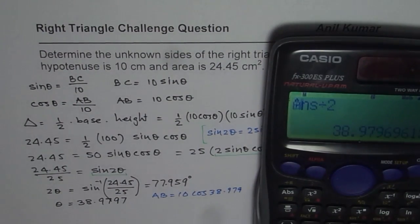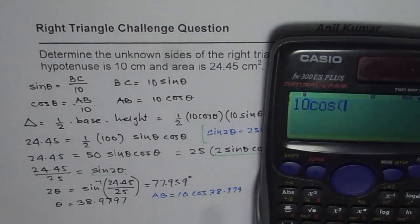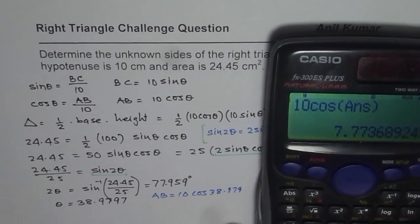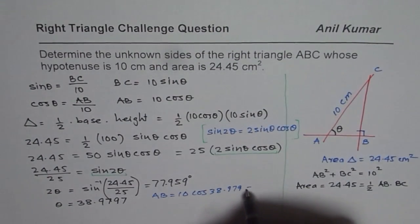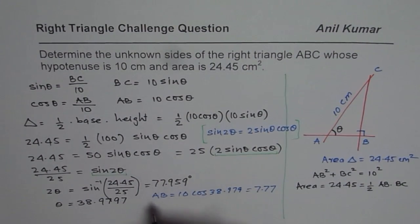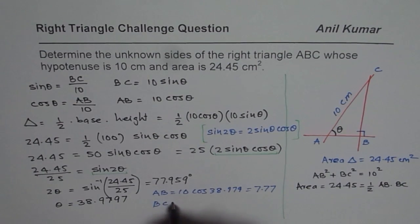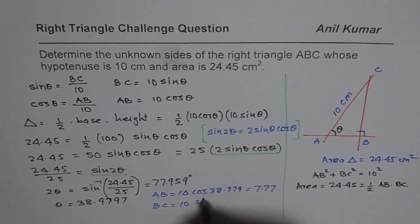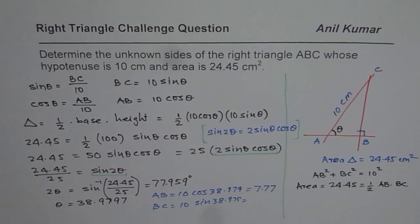We can calculate this. Okay. So we do 10 times cos of the answer, whatever we got, equals to 7.77. Let us write down this as 7.77. Similarly, the other side, which is BC, will be 10 times sine of this angle, right?